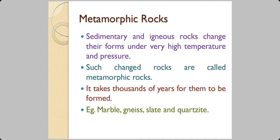The third type of rock in your textbook is a metamorphic rock. Sedimentary and igneous rocks change their form under very high pressure and temperature. The pressure will be because of the weight of soil on earth crust, and the temperature is because of the high temperature in the mantle. This changes the rocks into something else. The physical characteristics are changed. Such changed rocks are known as metamorphic rocks. It's a slow process. It takes thousands of years for them to be formed. Marble, gneiss, slate and quartzite are some examples.